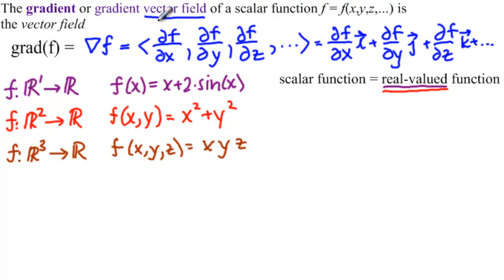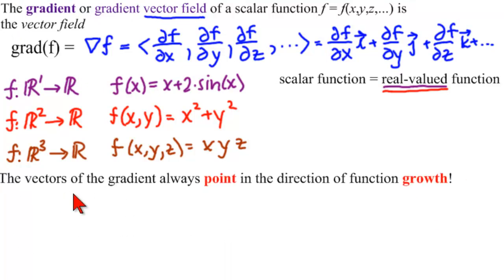Okay. What is the use of a gradient vector field? The vectors of the gradient always point in the direction of function growth. So if you can find the vector and draw it, you know in which direction the function is growing.